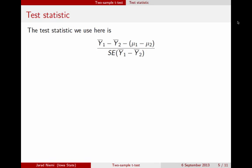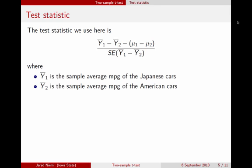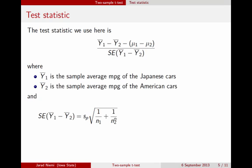We're going to go through the statistical hypothesis test first. To answer this, we need to create a test statistic. y-bar1 is the sample average miles per gallon of the Japanese cars, and y-bar2 is the sample average miles per gallon of the American cars. mu1 and mu2 are the true means for the Japanese and American cars respectively. We calculate the standard error of the difference in averages using what's called the pooled standard deviation SP, multiplied by the square root of the sum of the inverses of the sample sizes in each group.